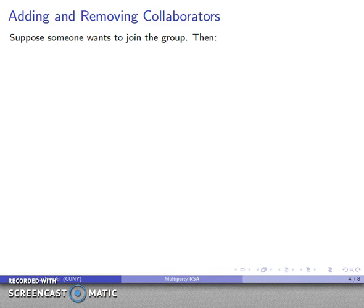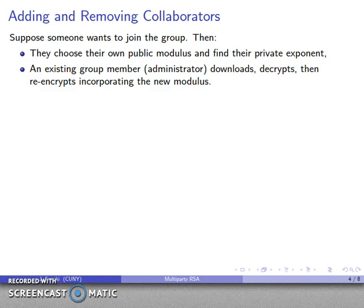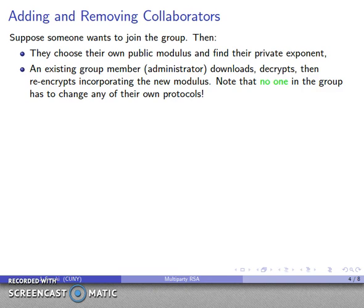To add a new person to the group, they choose their own public modulus and find their corresponding private exponent, since the public exponent has already been chosen. An existing group member — an administrator — needs to download, decrypt, and re-encrypt all the files this new person has access to, this time incorporating the new modulus by extending the Chinese Remainder Theorem system with one more congruence. Importantly, nobody else in the group has to change anything — they keep the same public modulus and private decryption exponent. This is a significant advantage.